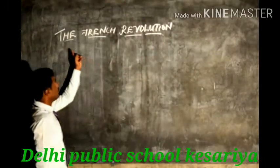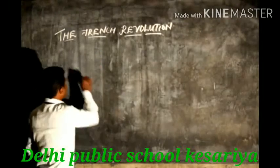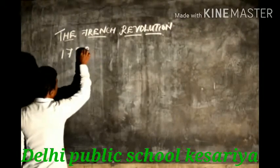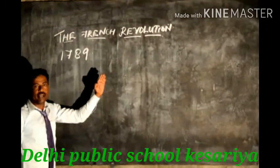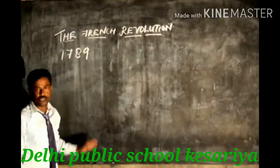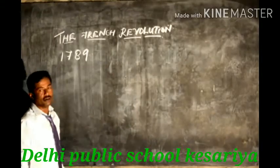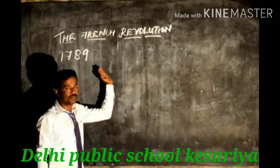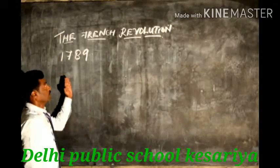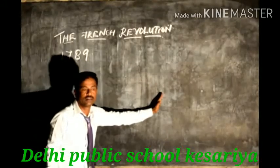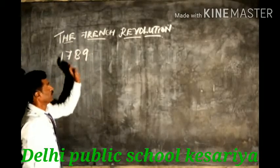The French Revolution happened in France in 1789. The first years of the revolution started in France. We are going to study about what is the reason for the revolution, what is the consequence of the revolution, and how it happened in France.